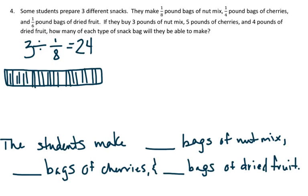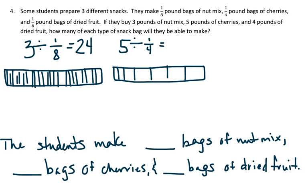Then I have 5 pounds of cherries. And I'm making 1/4 pound bags for that. So let me try a tape diagram for that one. So I have my 5, and I'm dividing it by 4. And that will give me 20.